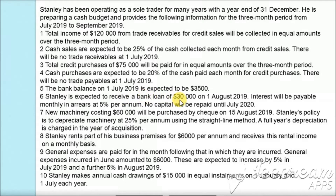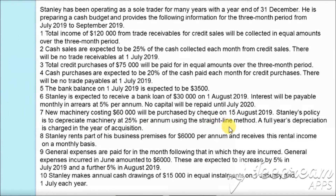Stanley is expected to receive a bank loan of $30,000 on 1st August 2019. Interest will be payable monthly in arrears at five percent per annum. No capital will be repaid until July 2020. New machines costing $60,000 will be purchased by cheque on 15th August 2019. Stanley's policy is to depreciate machinery at twenty-five percent per annum using the straight-line method, with a full year's depreciation charged in the year of acquisition.